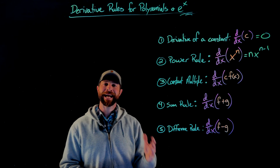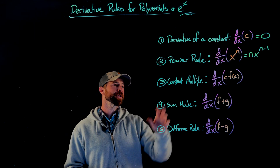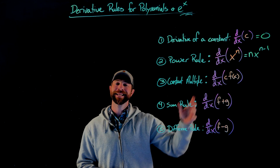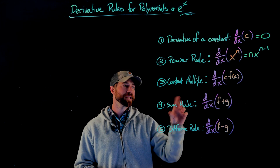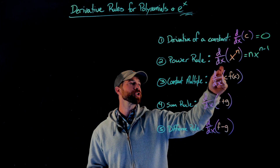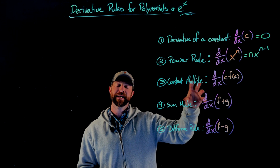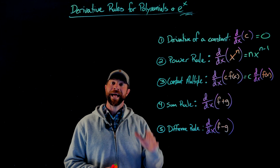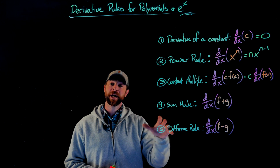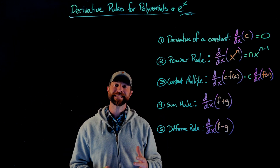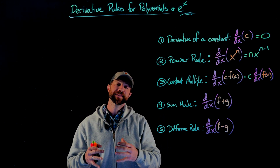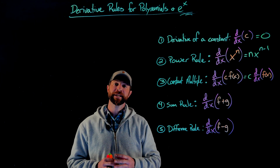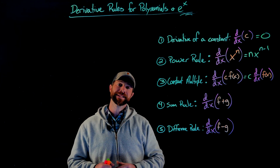These next three laws are exactly the same as the limit laws. First, how do you take the derivative of something with a constant out front? You can move the constant out front and then differentiate the function on the inside. Then we have sum and difference rules, which state that if you're differentiating two separate functions being added or subtracted, you can differentiate both of those separately.